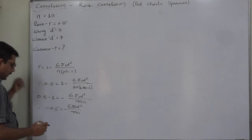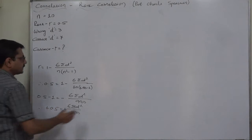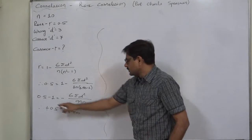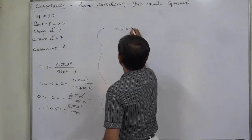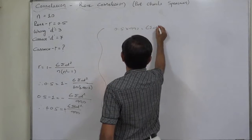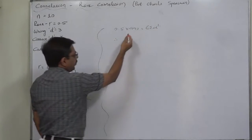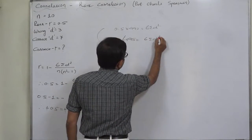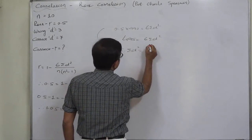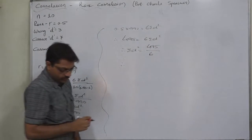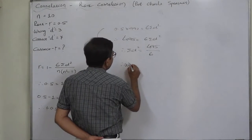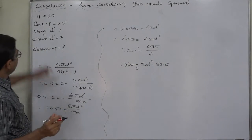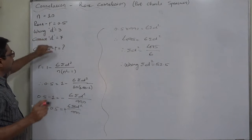Since both sides are negative, they cancel, giving 0.5 = 6·sigma d² / 990. Cross-multiplying: 0.5 × 990 = 6·sigma d², so 990/2 = 495 = 6·sigma d². Therefore sigma d² = 495/6, which gives the wrong sigma d² = 82.5.